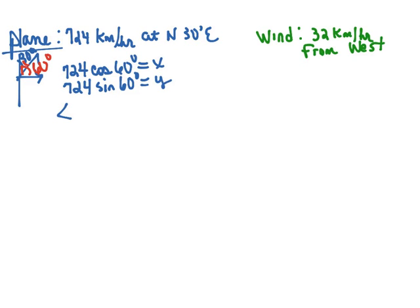And so our plane vector will turn out to be 362, and the y component is 627.002 if we round it to three decimal places.